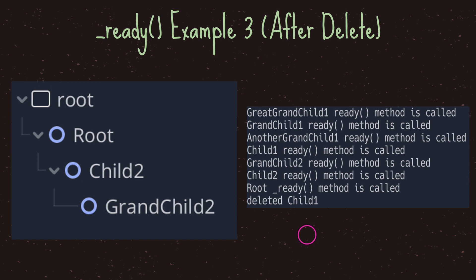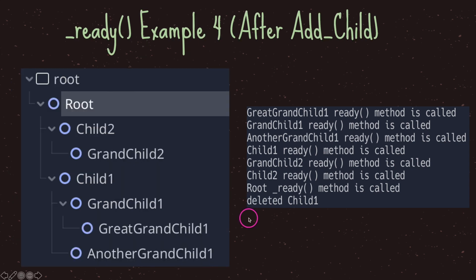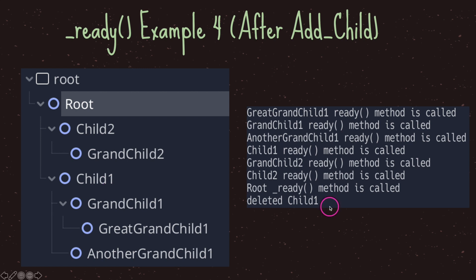Our root viewport now only has the root, child two, and grandchild two. Now we're going to add child one back and see if the ready virtual method gets called again. Child one is added back onto the scene tree — notice it appears beneath child two. However, our console hasn't changed even though the code is still there and the ready virtual method has a print statement. The print statement has not been called because since the ready virtual method was already called, it will not be called again.